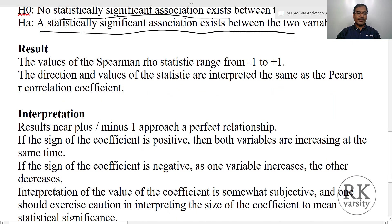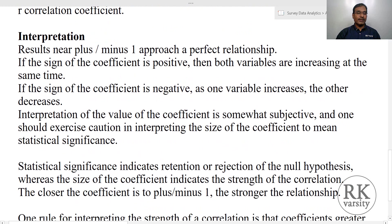The result of a Spearman's rank correlation ranges between minus 1 and plus 1. Minus 1 represents a negative correlation, and plus 1 represents a positive correlation. The direction of values is interpreted the same as a Pearson correlation coefficient. Results near plus or minus 1 approach a perfect relationship; however, practically, a perfect relationship is rarely possible.